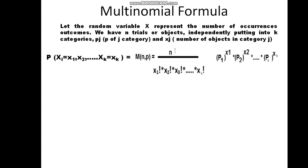The formula is the multinomial coefficient N! divided by (X1! times X2! times ... times XK!), multiplied by P1 to the power X1, multiplied by P2 to the power X2, and so on, multiplied by PK to the power XK.